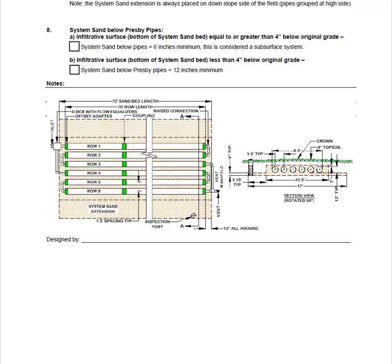Step eight helps us determine how much sand will be required beneath the Presby pipes. If the bottom of the system sand bed is greater than 4 inches below original grade, the system is considered a subsurface system and only needs 6 inches of sand beneath the Presby pipes. If the bottom of the sand bed is less than 4 inches below original grade, it is considered an elevated system and will require 12 inches of sand beneath the pipes. Our system is a subsurface system, so we will only need 6 inches of sand beneath the pipes. Any additional information can be included in the notes section. I have included the plan and section view drawings of the bed we just designed, which can also be found on page 16 of the design and installation manual. This concludes part three. Up next is part four, which will cover the installation process. If you have design questions not answered here, please feel free to call our technical support line.